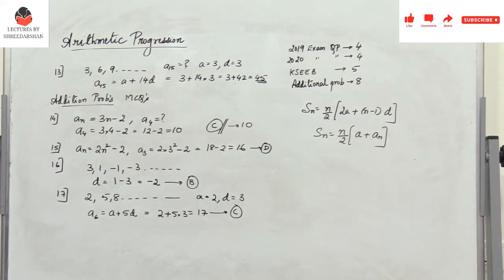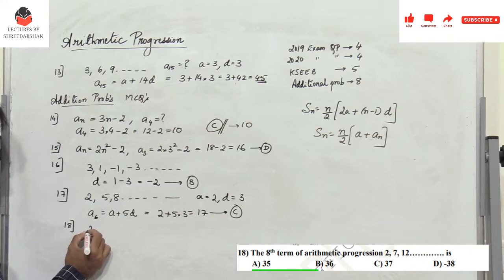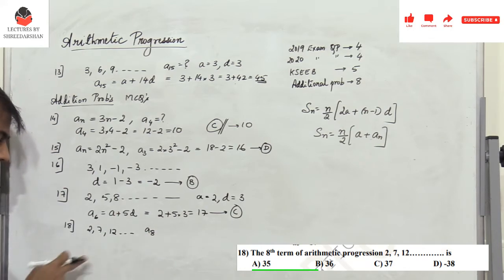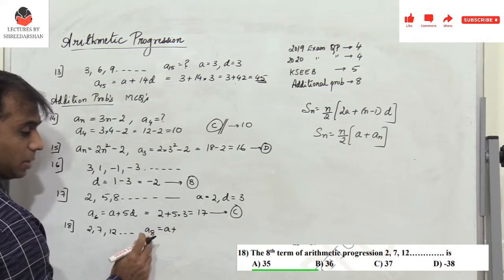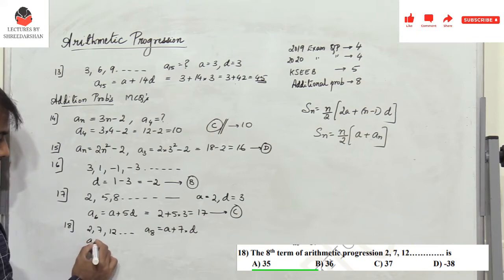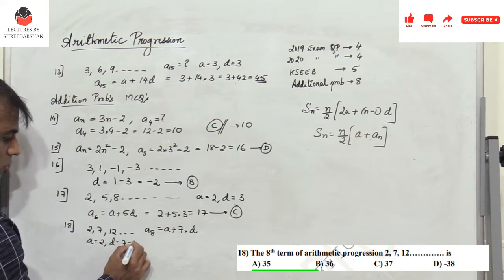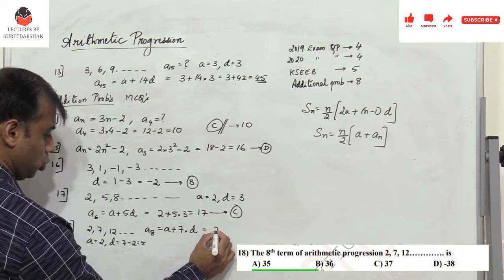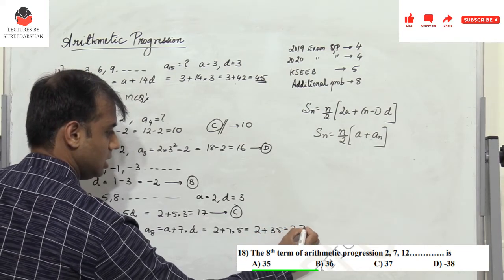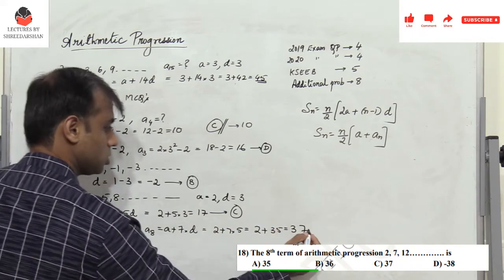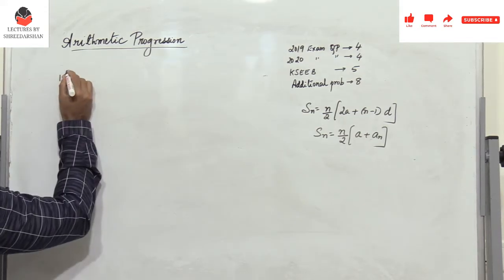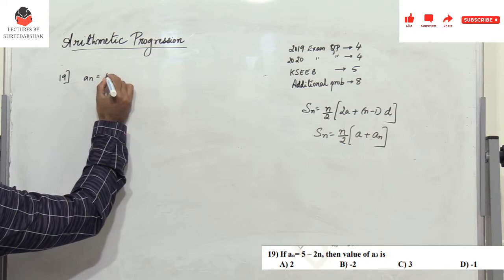Problem 18: for the arithmetic progression 2, 7, 12, ..., find a₈. a₈ = a + 7d = 2 + 7×5 = 2 + 35 = 37. The value 37 corresponds to option C.